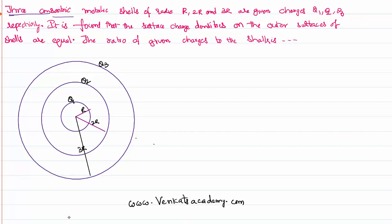There are three concentric metallic shells of radii r, 2r, and 3r. This is shell one of radius r, this is shell two of radius 2r, and this is the bigger shell of radius 3r — all of them having a common center. They were given charges of q1, q2, and q3 respectively, as shown.